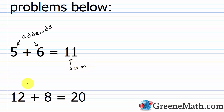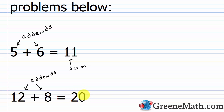Next we have twelve plus eight equals twenty. Twelve and eight are the numbers being added together — those are the addends. Twenty is the result of twelve plus eight, so twenty is the sum.